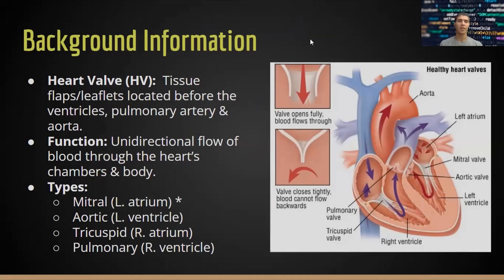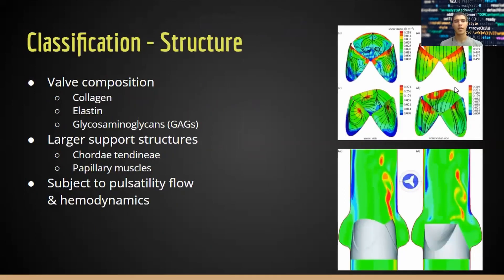We're talking about heart valves today. Heart valves are tissue and leaflets located in the heart, and their main function is to provide unidirectional flow of blood through the system. There are two circuits — the systemic circuit and the pulmonary circuit — and there are four main types of valves: the mitral, aortic, tricuspid, and pulmonary.